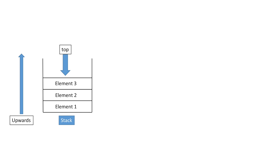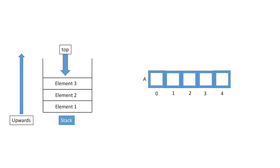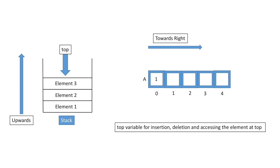When we implement a stack using an array — say an array of five elements — the direction of the stack in our logical representation would be towards the right. We add elements from left to right. We use a top variable for insertion, deletion, and accessing the element at the top. Currently top will be at index zero, and to add another element we increment top by one and insert the element at that position.